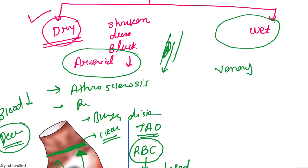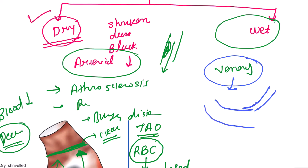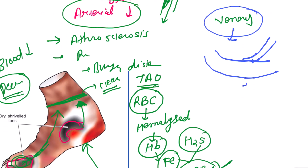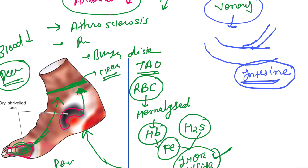Wet gangrene mostly occurs because of venous blockage. That means the artery is intact, so blood is continuously being supplied to that particular part. Wet gangrene most commonly occurs in soft tissue such as the intestine, though the lower limb can also develop wet gangrene. It most commonly occurs in cases of diabetes mellitus.